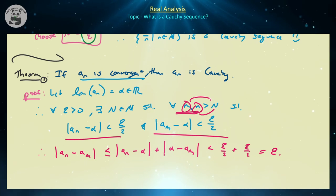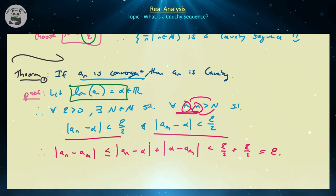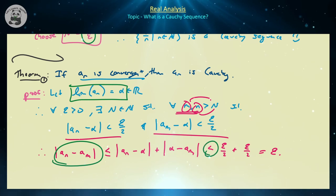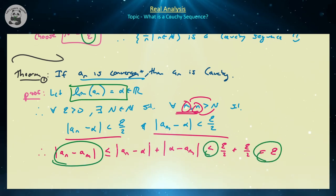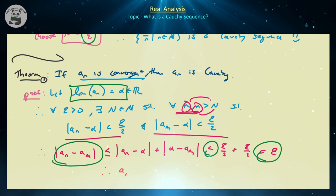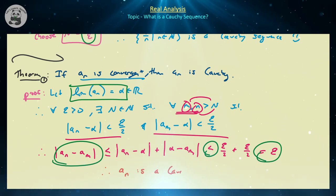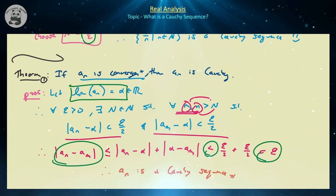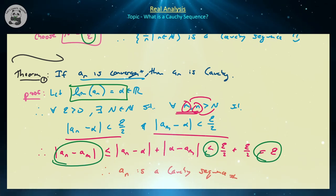We've shown that if the sequence converges to α, then the distance between any two terms is arbitrarily small — less than ε — which means that if a sequence is convergent, then the sequence is a Cauchy sequence. The proof of that is actually not that bad.